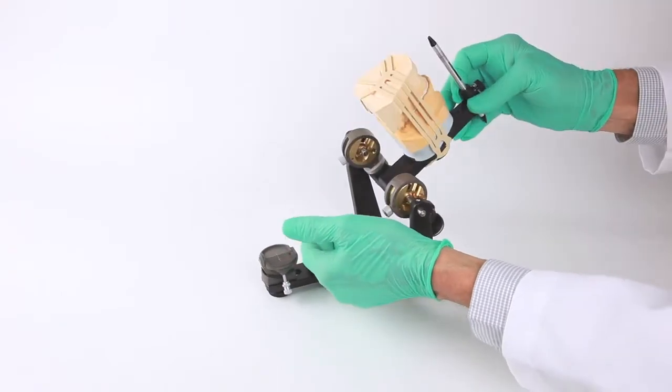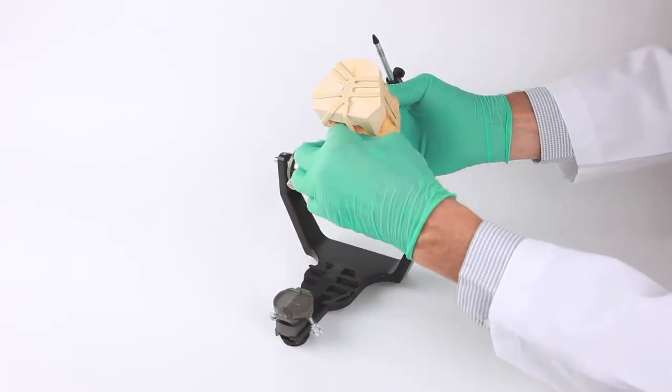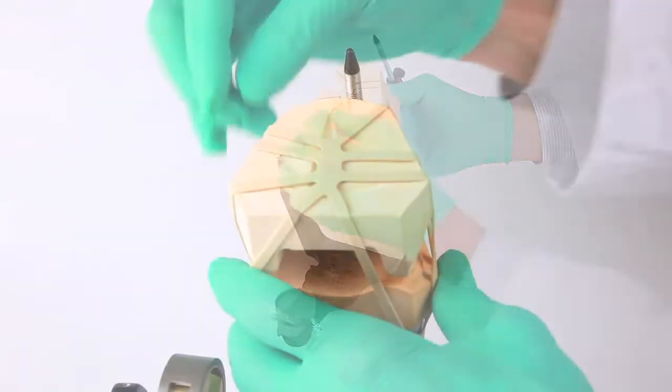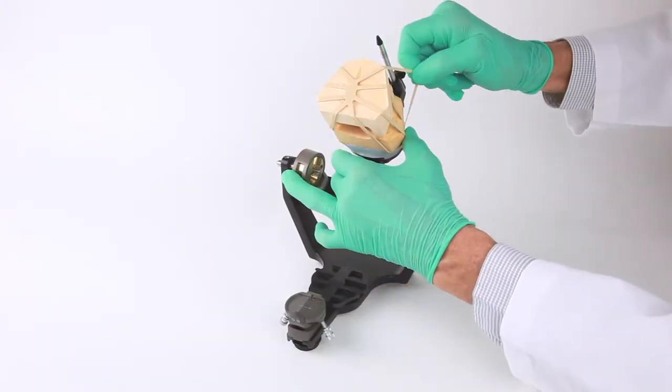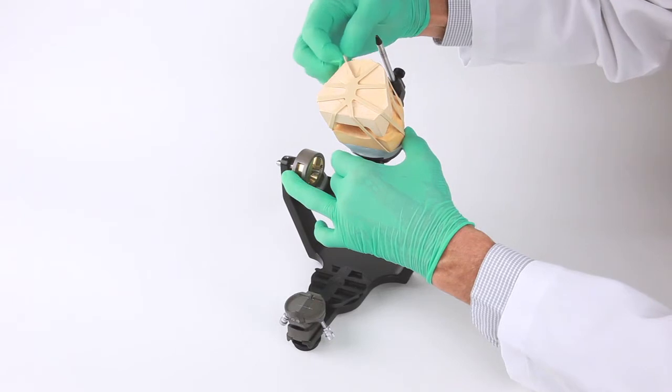Next, the articulator arm can be inverted, exposing the base of the cast, then the flexi-mount is centered on the cast by adjusting and positioning each of the separate elastic arms into position.